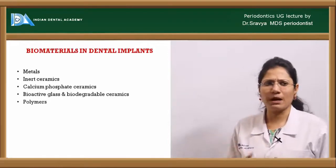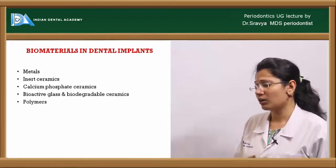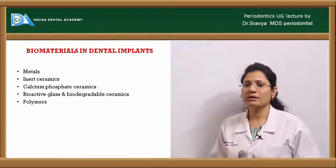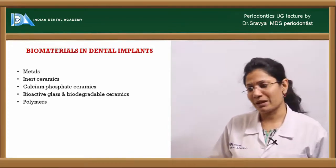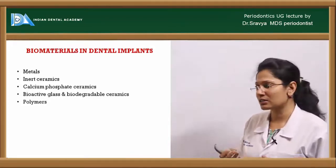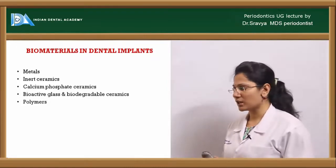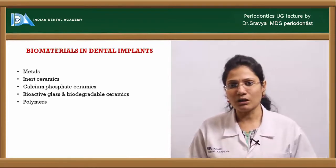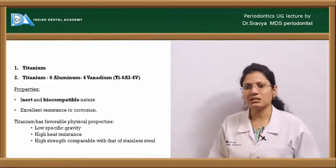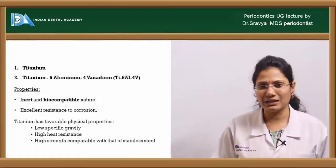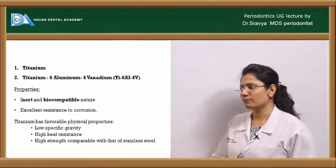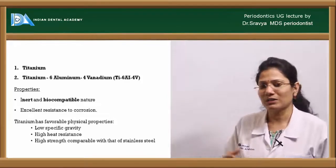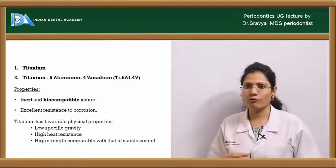Various biomaterials have been used to replace a tooth in the form of dental implants. These include various metals and alloys, inert ceramics, calcium phosphate ceramics, bioactive glass, biodegradable ceramics, and various polymeric substances. However, the best material of choice is titanium and its alloy — titanium 6 aluminium 4 vanadium — meaning 90% titanium, 6% aluminium, and 4% vanadium.